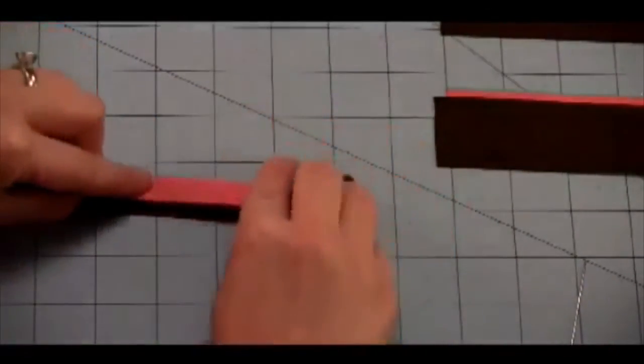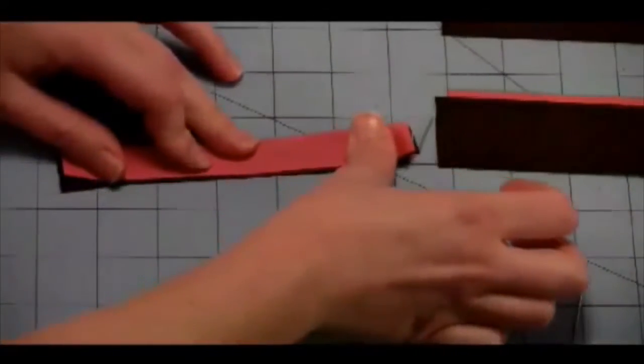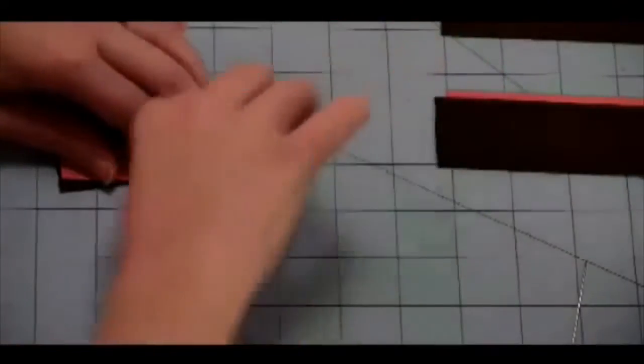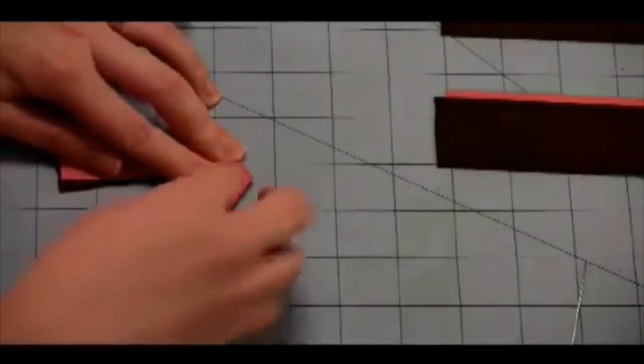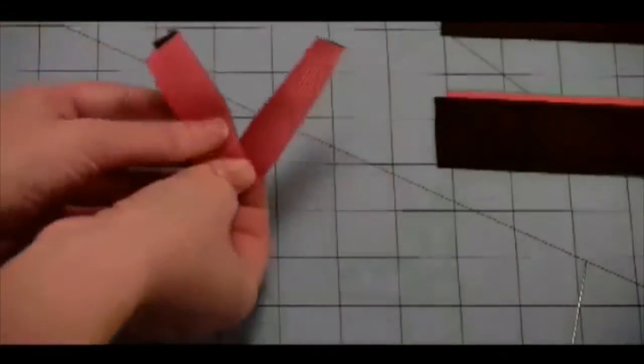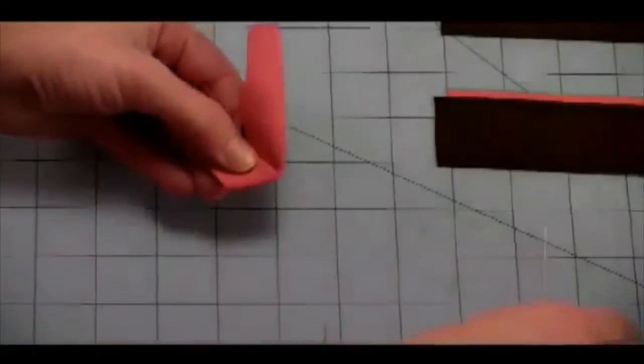I'm going to take my first piece, fold it in half, then I'm going to come across here at an angle and make a V. Now make sure that both ends of your V are the same length. That will just create a better looking bow.